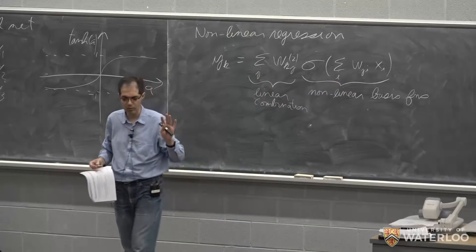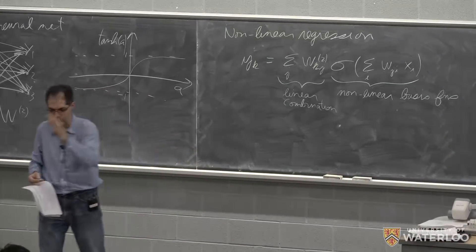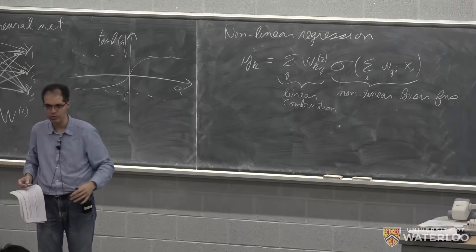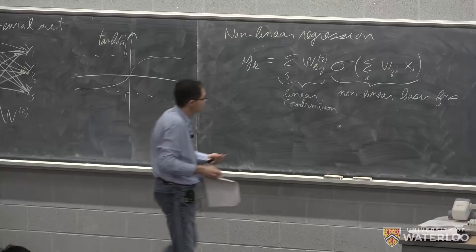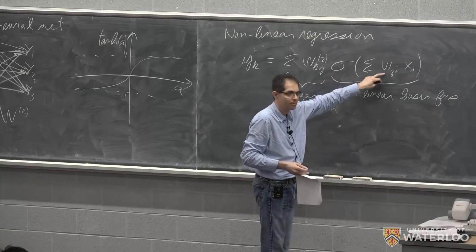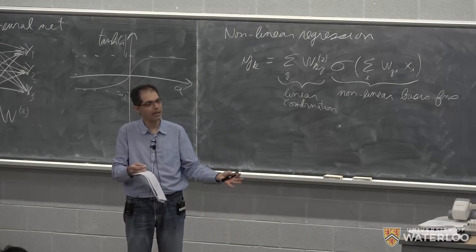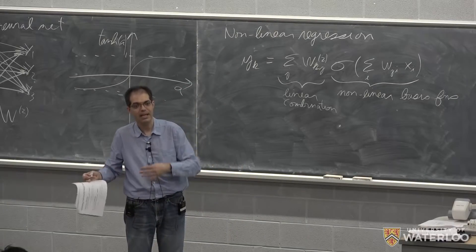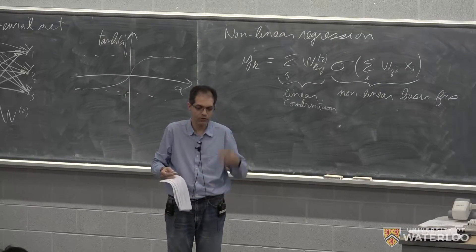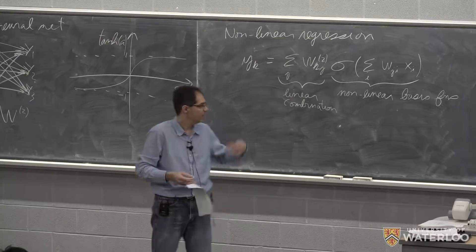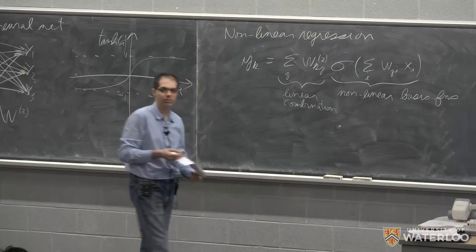Earlier we said we'd map our data into a new space using some nonlinear function phi. Now beyond just using the sigmoid, we introduce weights that correspond to parameters. What we're effectively doing is allowing our basis functions to adapt as we train. Whereas before, basis functions were specified and then remained fixed, now we allow the basis functions to adapt as we train. That's the main difference.